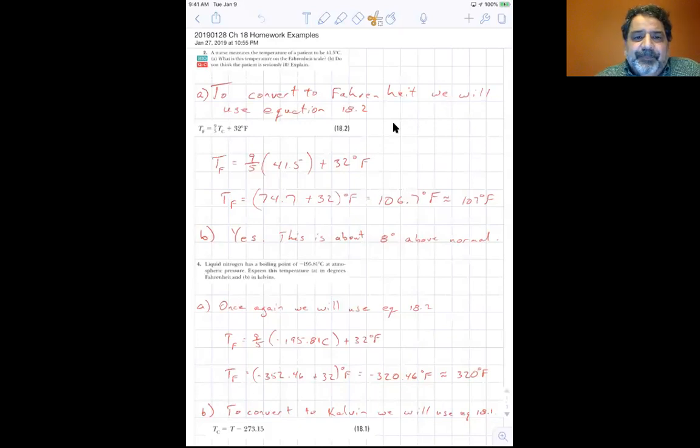The TF equals 9 fifths TC plus 32 degrees. So 9 fifths times 41.5 plus 32. Well, you end up with 106.7. Well, we're only going to use three significant figures, so that's 107 degrees Fahrenheit, and that's about eight degrees above normal. So yes, the person is ill.